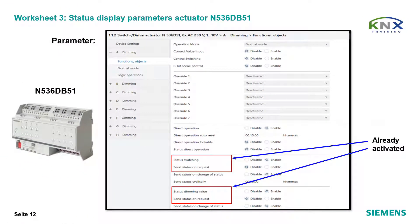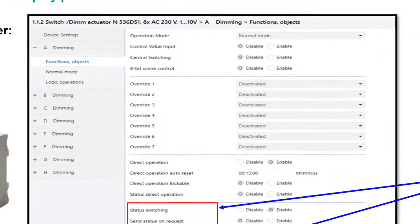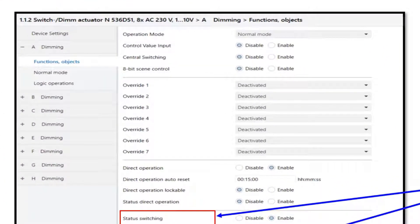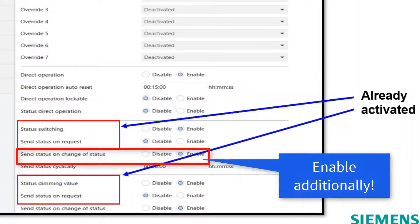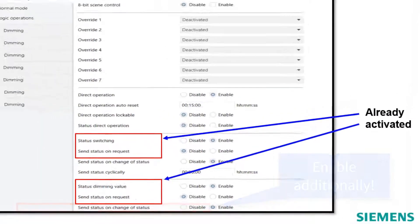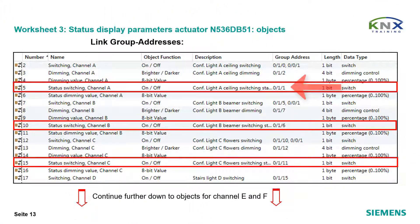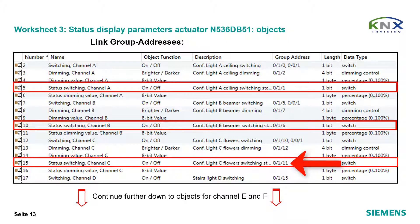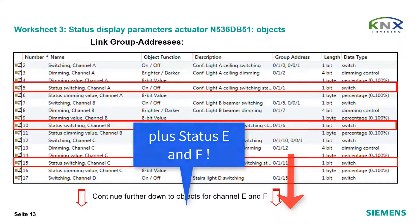Status display parameters — actuator N536DB51. Check if the actuator for switching and dimming is enabled to send feedbacks automatically on change; you must do this on the parameter page 'Functions Objects'. Check the status objects of the actuator N536DB51, create group addresses if not already created, and link them to these status objects. Afterwards, don't forget to download.